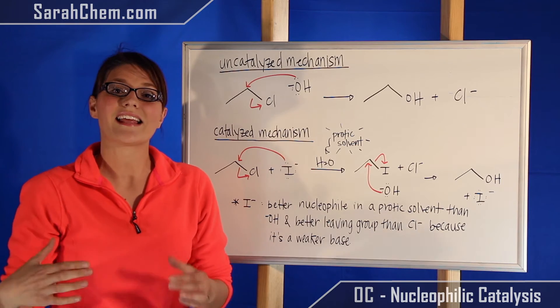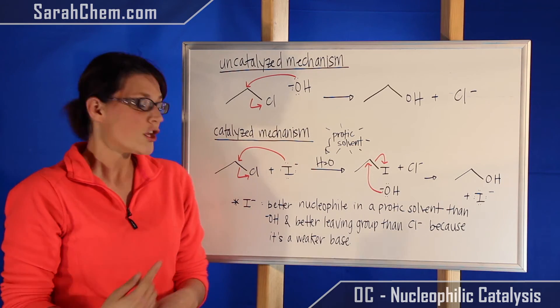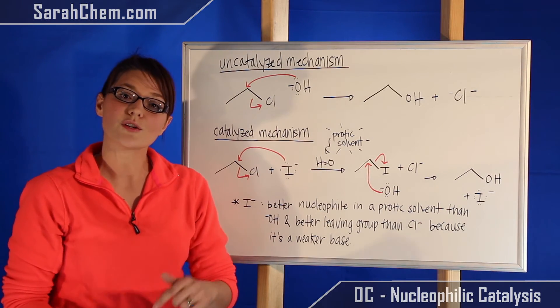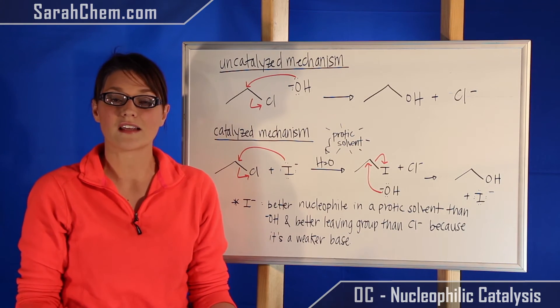Now the reason we want to switch out the I and the Cl is because iodide is a weaker base, which means that it is a much better leaving group. So by substituting the chloride for an iodide, we've created a situation where it makes it easier for hydroxide to come in and kick off the group. Iodide is very easy to get rid of.